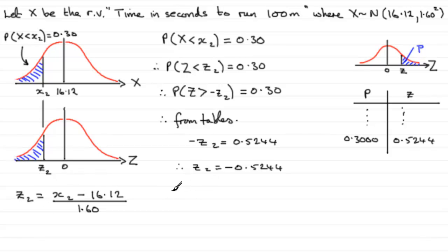And we can substitute it into this equation and therefore get that minus 0.5244 for Z2 equals X2 minus 16.12 all divided by 1.60. And if you rearrange that now by multiplying both sides by 1.60 and adding 16.12,